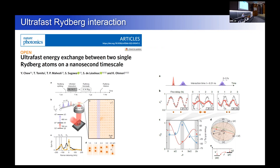A very recent experiment from Kenji Amori's group in Japan showed extremely fast Rydberg interactions — they observed energy exchange between two single Rydberg atoms on a nanosecond timescale. Using an array of pairs of atoms with variable pair spacing, on a few-nanosecond timescale (about six nanoseconds), they were able to observe energy coupling and phase shifts between atoms. They haven't demonstrated a fidelity number yet, but this has the perspective of enabling Rydberg gates on sub-10-nanosecond timescales, which would be quite interesting.